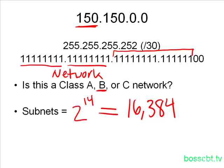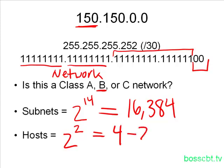Let's see how many hosts are going to be in each one of those subnets. The formula is 2 to the number of host bits — here there aren't very many, there are only two left. 2 to the power of 2 equals 4, and then we subtract 2 — one for the subnet number, one for the broadcast — to give us two valid hosts in each one of these 16,384 subnets. So here we're creating many subnets, but each one is very small — we only have two IPs we can actually assign to devices in each subnet.